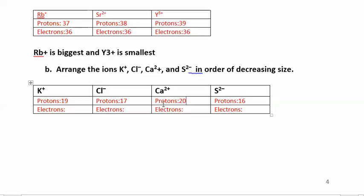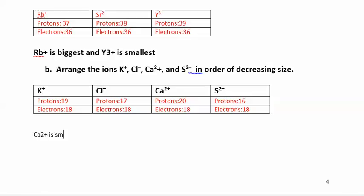We're assuming this is an isoelectronic series — let's double check. Calcium has 20 protons and if neutral has 20 electrons, but it loses 2, giving it 18 electrons. Sulfur gained 2 electrons, so it also has 18. Chlorine gained one electron, giving it 18. And potassium lost one electron, giving it 18. So all four have 18 electrons. Calcium 2 plus has the most protons and the strongest pull, so it's the smallest. Sulfur has the fewest protons, so it's the biggest.